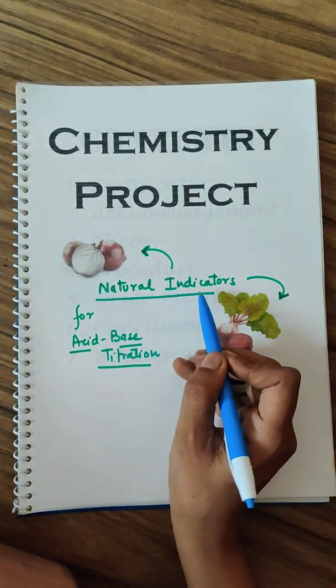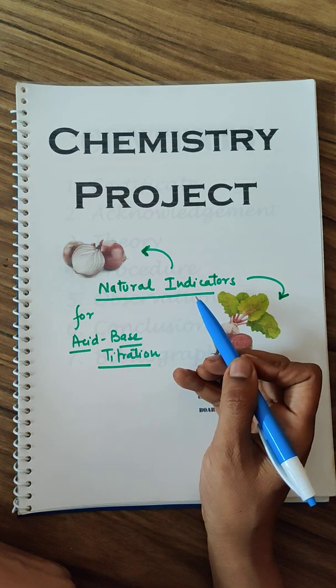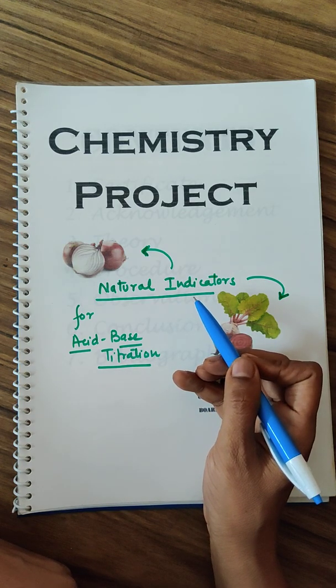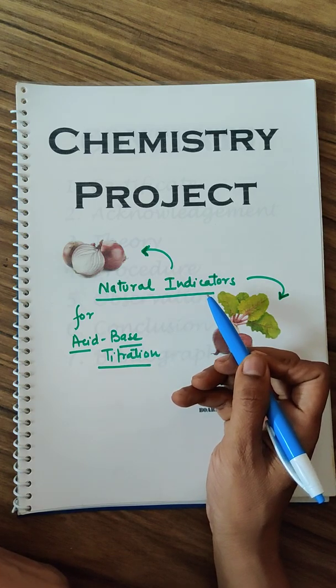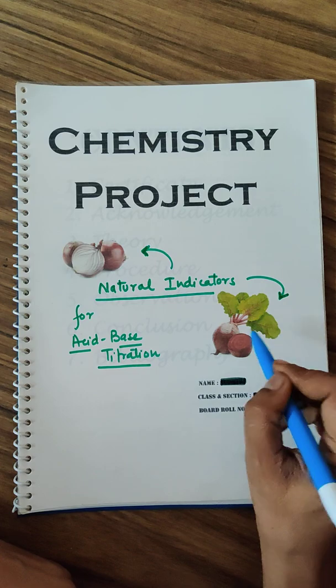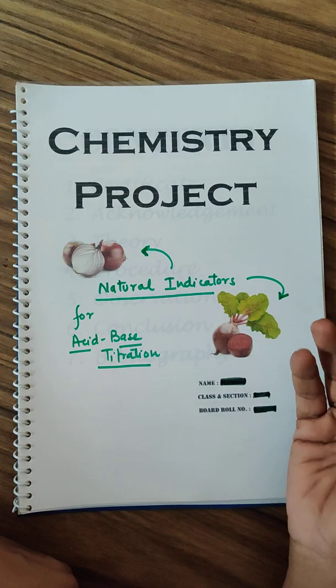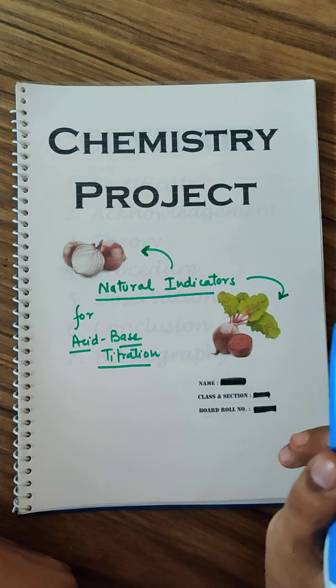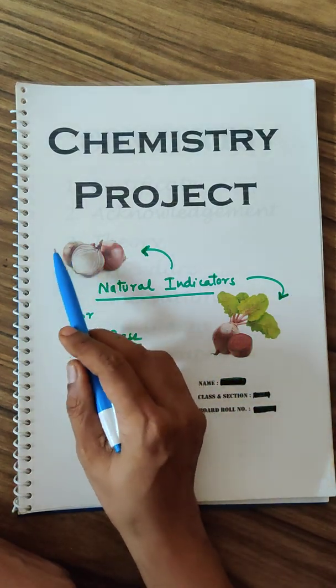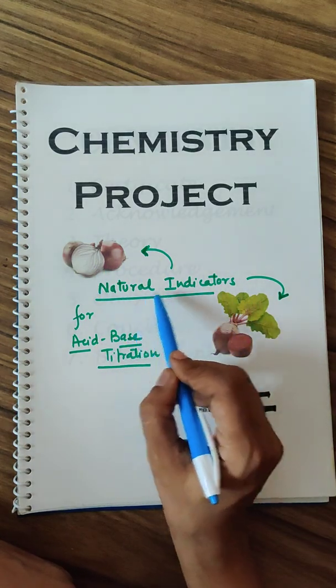This one is a chemistry project on natural indicators. Now there are many things which can act as natural indicators - there are flowers like marigold, petunia, rose. You also have onion peels which can act as indicators, beetroot which can also act as indicator, and red cabbage. You can use any one of these.